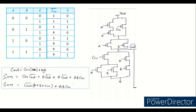In the pull-down structure, A and B are connected in parallel (representing A + B), and C-in is connected in series with that parallel combination. A·B is in series, and these two branches are in parallel. The complementary pull-up uses P-transistors with series and parallel swapped. The CMOS output of this implementation is C-out bar, because no complemented bar appears in the original C-out expression.